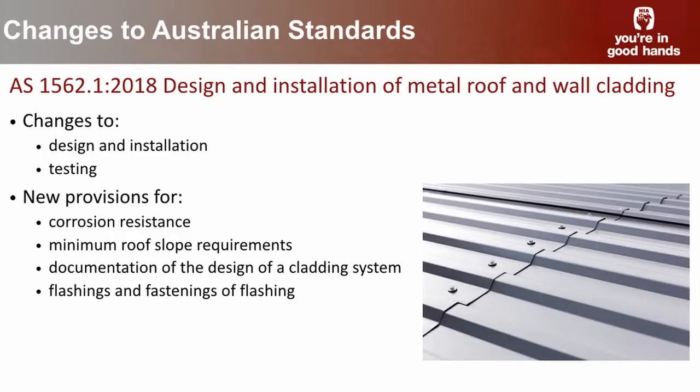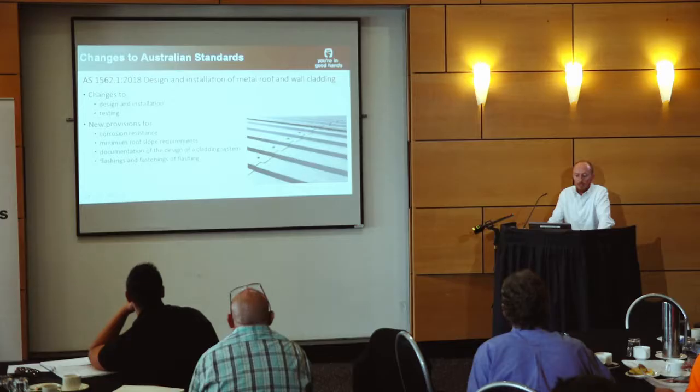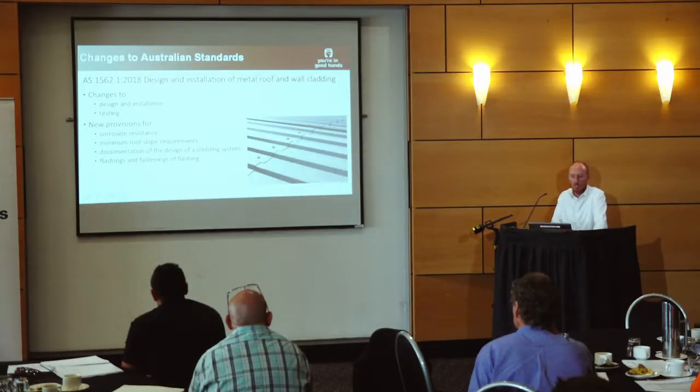Getting on to AS 1562 Part 1 — there have been some changes to the design, installation, and testing requirements. This standard is a bit unique in that it's really a manufacturing standard, not really a design and install standard. It's different to the ACP provisions in volume 2 for metal sheeting — this one is really about a system, talking about the tested system as a whole. There have been some improvements to the documentation requirements for those systems, some changes to the flashing and fastening requirements, and some testing requirements about the airbox test and the high-low test, which are more applicable to areas beyond N3.